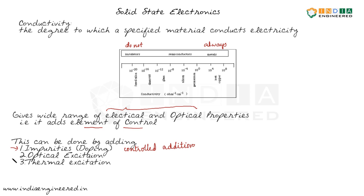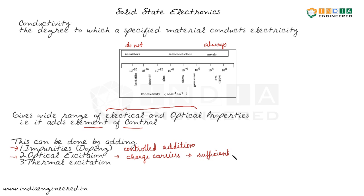Another way to increase conductivity is to optically excite the semiconductor. If an electromagnetic wave of sufficient wavelength falls on the semiconductor, it will generate charge carriers in the system. An important point to note is that the incident wave should have sufficient energy to generate the charge carriers.